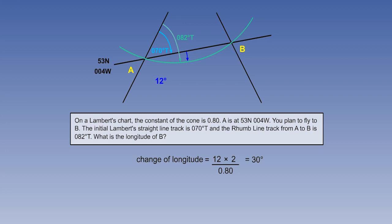So, if A is at 4 degrees west, and B is 30 degrees east of it, B must be at 26 degrees east.